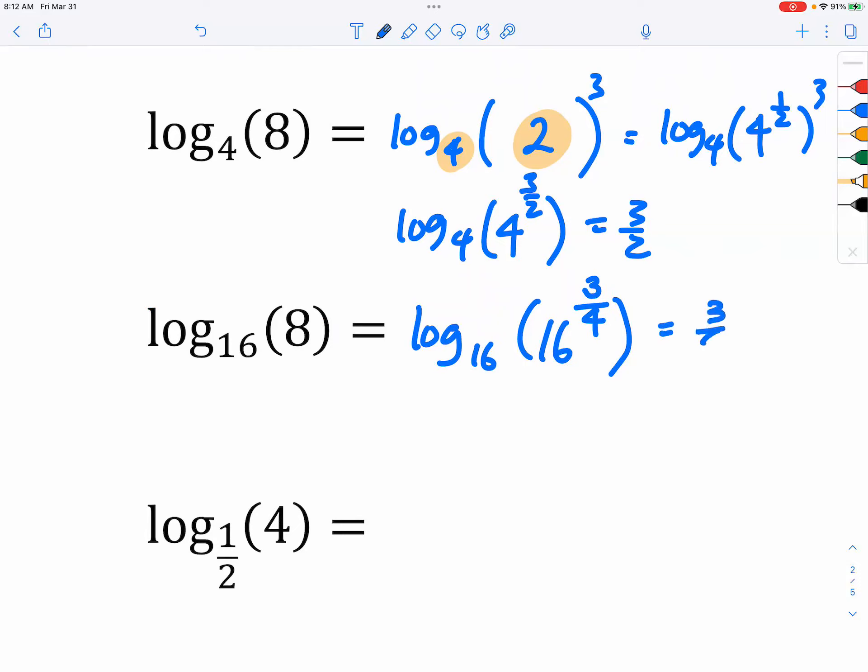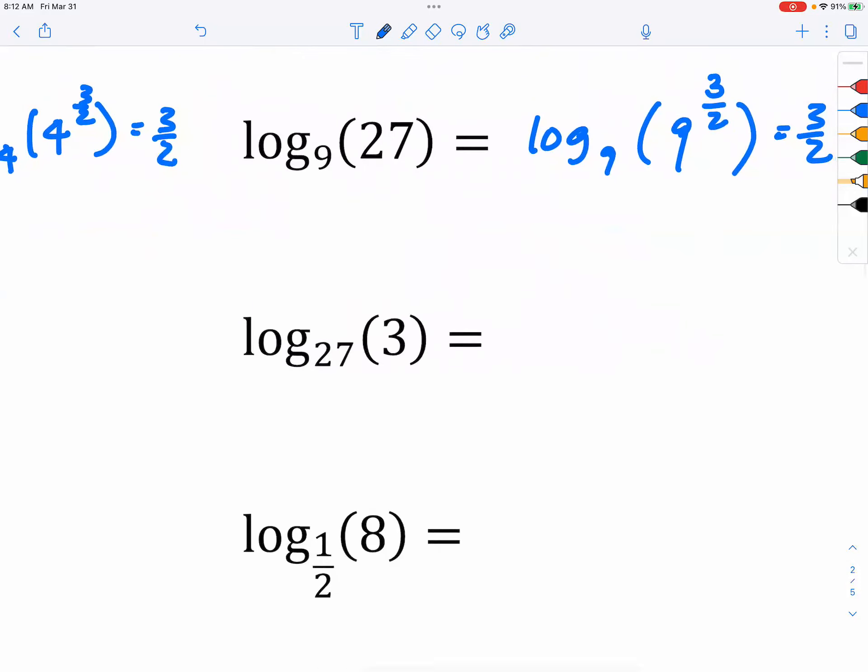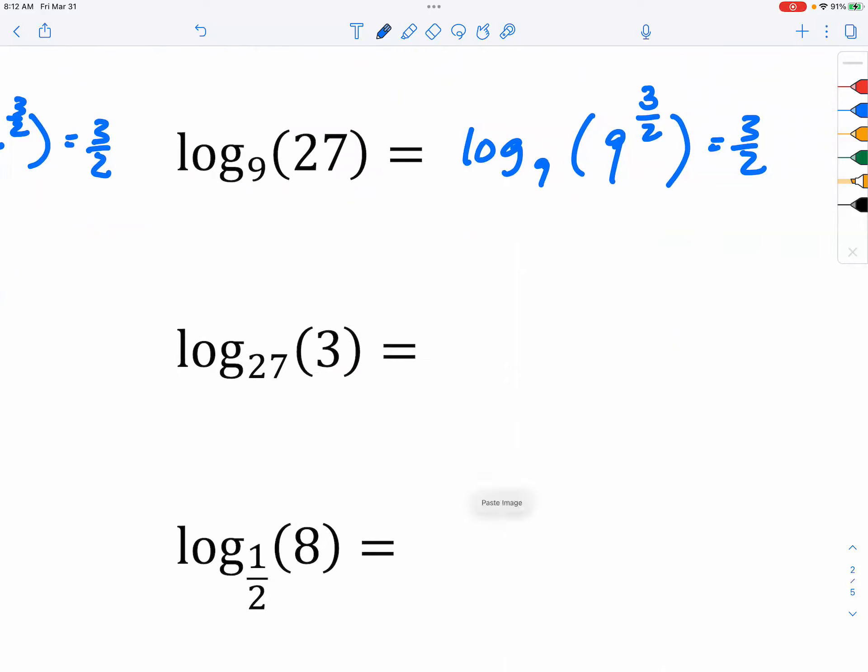So that's why the answer is 3 quarters. All right. So what about this? Well, this one is actually pretty easy. So this one is simply saying, how do we go from 27 to 3? Well, it's the cube root of 27, which means it's 27 to the 1 3rd power. So the answer is 1 3rd.